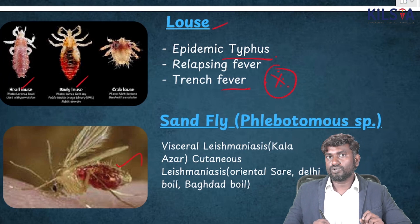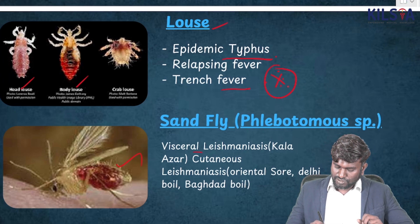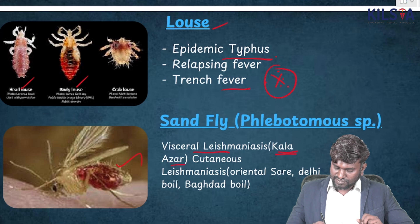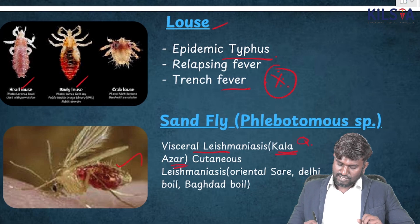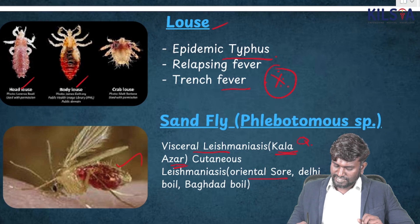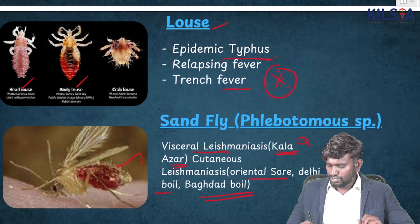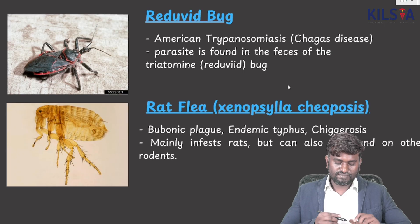This is going to be Sandfly — also called Phlebotomus. It causes visceral Leishmaniasis — remember Kala-azar, very important. It also causes cutaneous Leishmaniasis, which leads to Oriental Sore, Delhi Boil, and Burd. These are the important points to note on Sandfly.